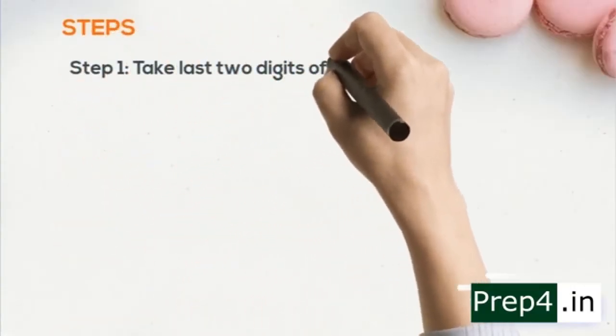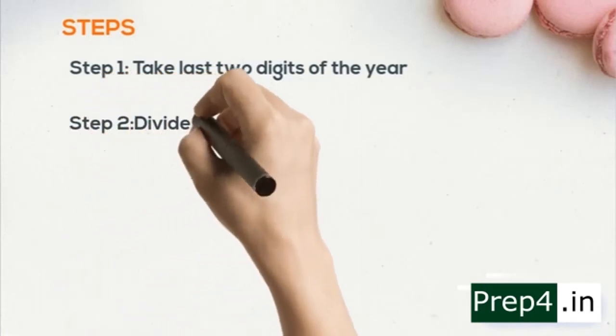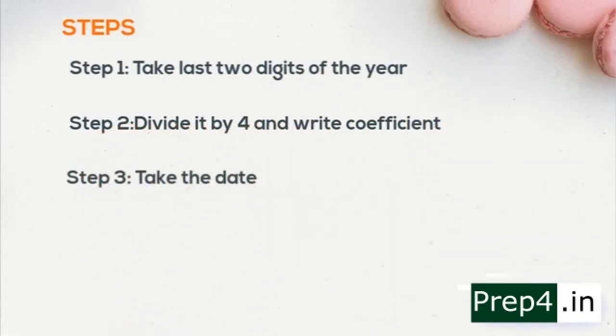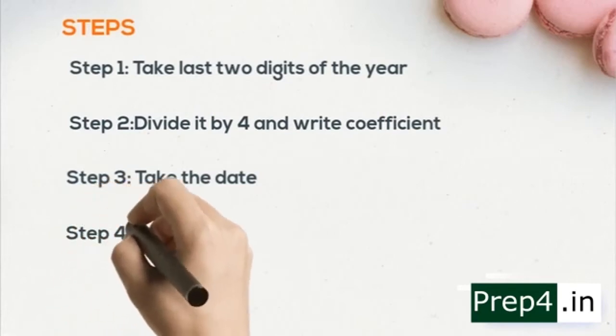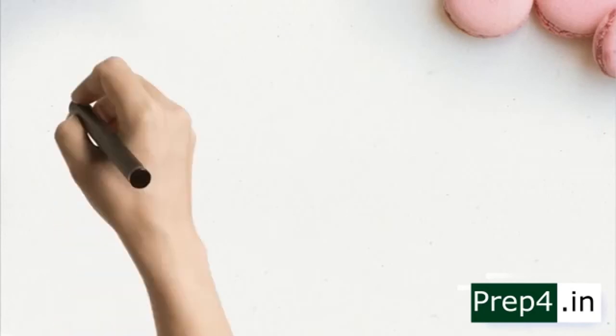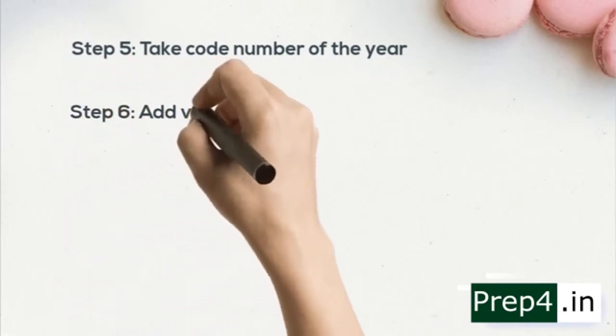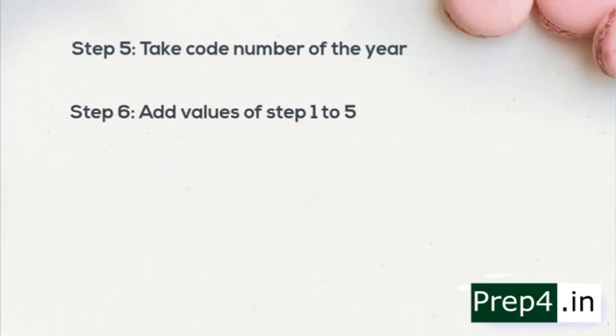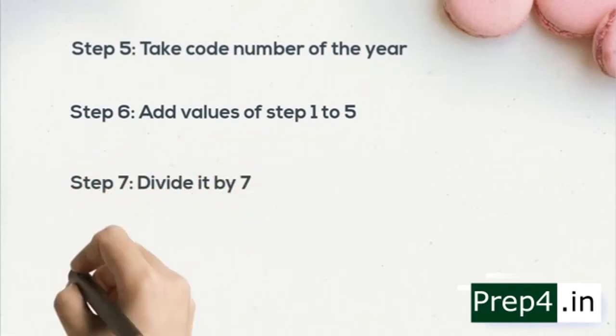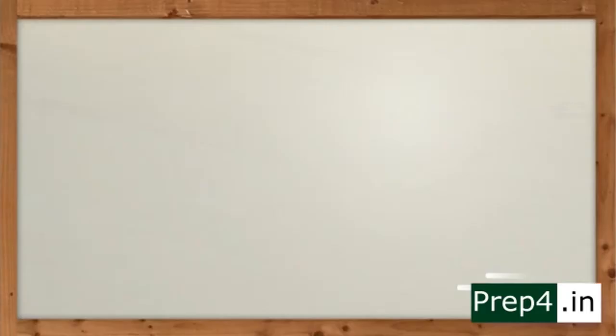Step 1: Take the last two digits of the year. Step 2: Divide it by 4 and write the quotient. Step 3: Take the date. Step 4: Take code number of the month. Step 5: Take code number of the year. Step 6: Add value of step 1 to 5. Step 7: Divide it by 7. And in the end, step 8: Take the remainder and compare with day codes. To make it more understandable, let's do a problem.